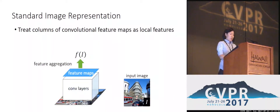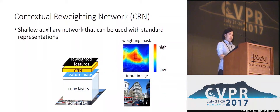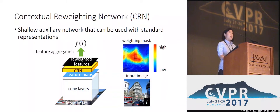In previous work, columns of feature maps were treated as local features, and these features were aggregated to produce a compact image representation. But instead of using all features that are available, we want to focus on those that are more useful. To this end, we propose a contextual re-weighting network, which is a shallow auxiliary network that can be used with standard representations.